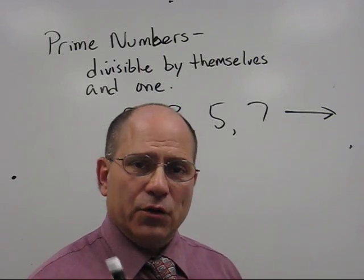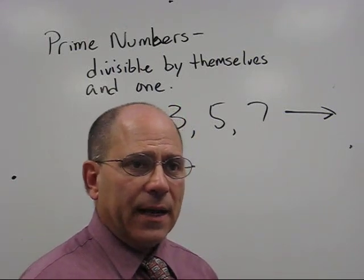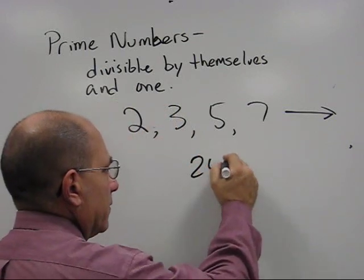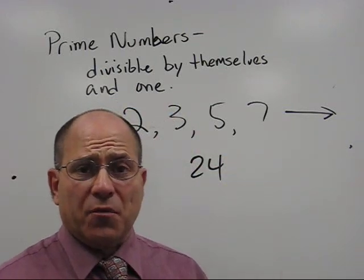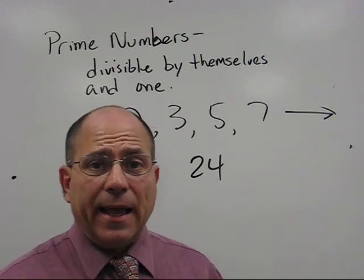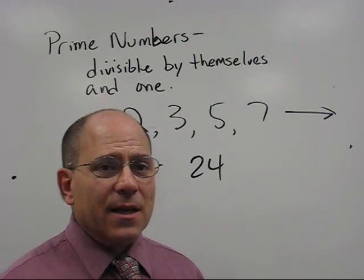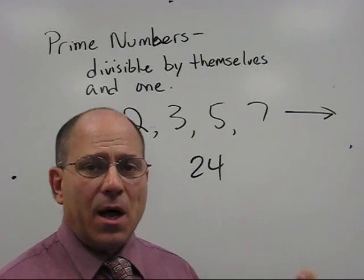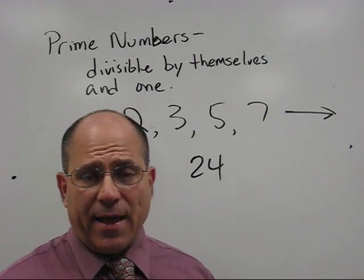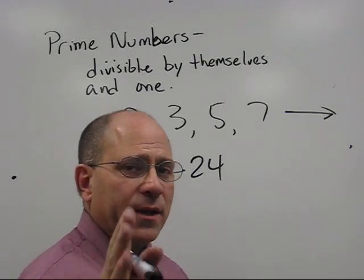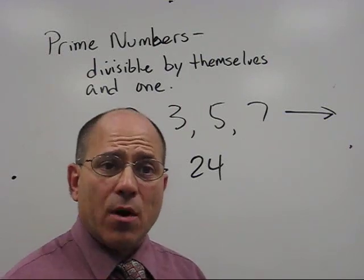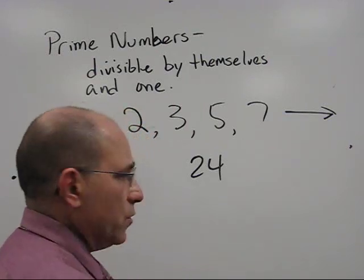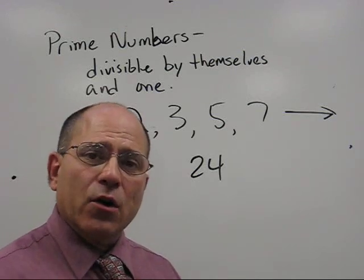What we're going to want to do is we're going to take a number like say 24. 24 is not prime. It can be divided by 2, 3, 6, 8, 12. It's what's known as a composite number because it has so many factors. But if we wanted to break 24 down into its smallest components, its prime numbers, we would use either a factor tree or a thing called a ladder.